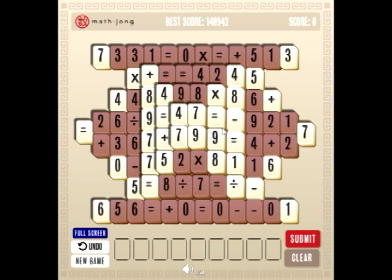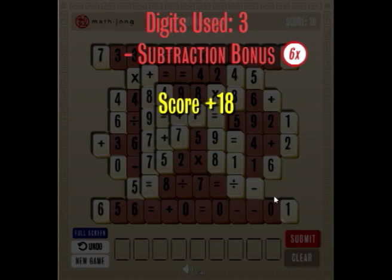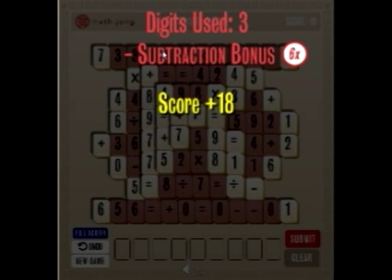So, for something simple, you might say 9 minus 7 equals 2. Now I hit Submit, I get a subtraction bonus based on that times the number of tiles you used. Scored 18 points there.